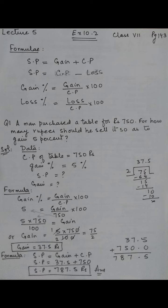After calculation and cancellation, the gain value comes out. Now we use the formula gain plus CP.